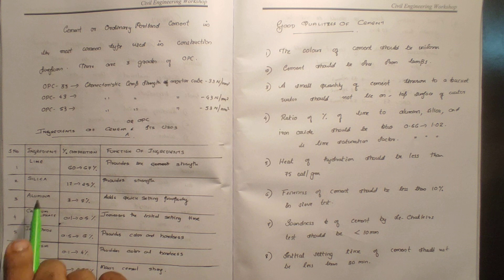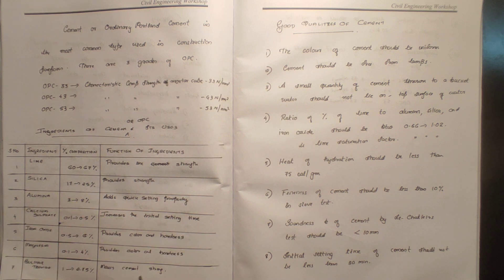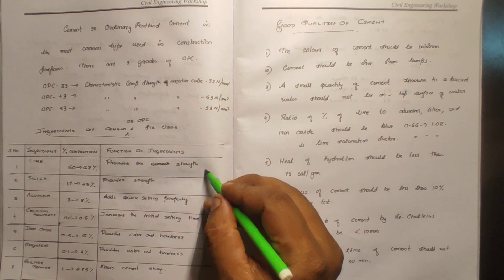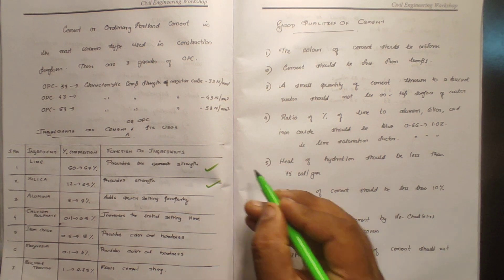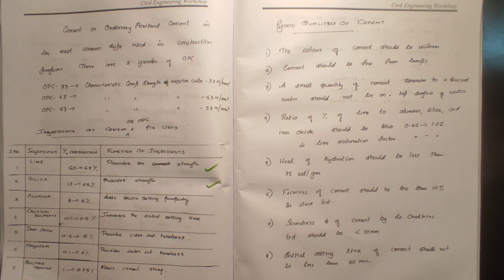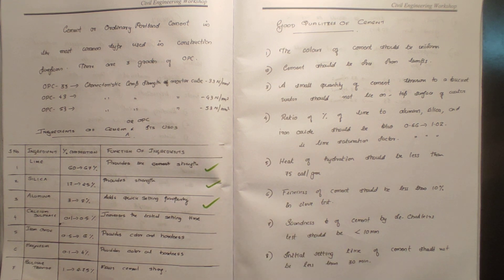The first main component of cement is Lime, which makes up 60 to 67%. It provides strength. The third main component is silica, which also provides strength. Aluminium (alumina) makes up 3 to 8% and adds a quick-setting property.